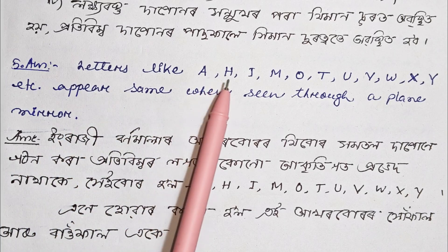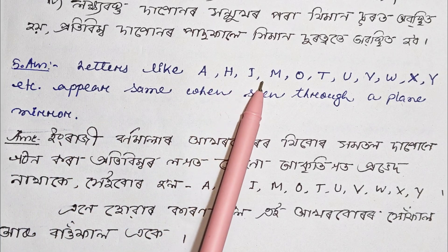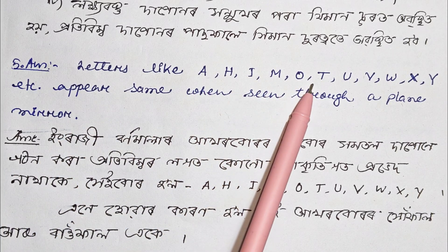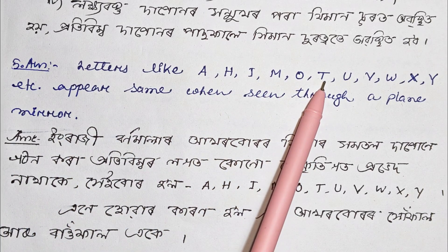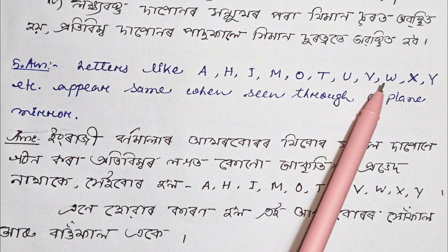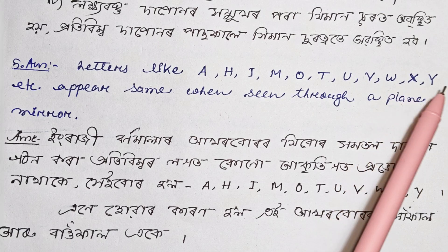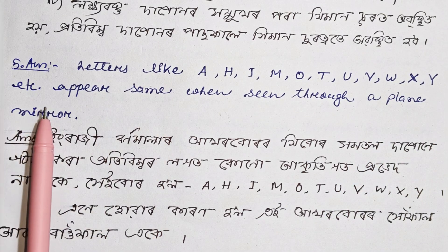Number 5 — lateral inversion: letters like A, H, I, M, O, T, U, V, W, X, Y etc. appear the same when seen in a plane mirror.